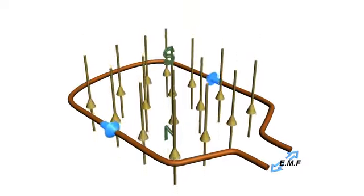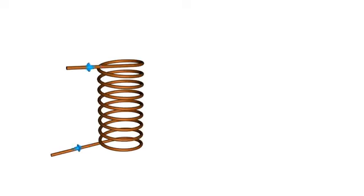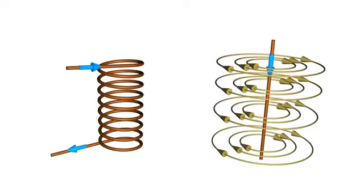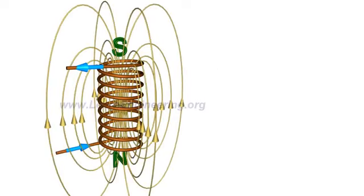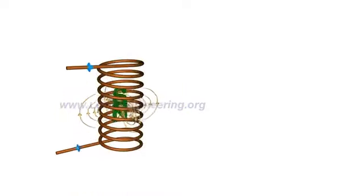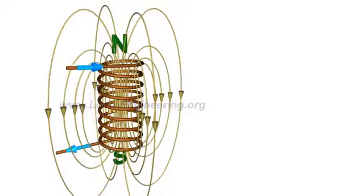Such a fluctuating magnetic field can easily be produced by a coil and an alternating EMF system. A current carrying conductor produces a magnetic field around it. With the fluctuating nature of the alternating current, the magnetic field associated with the coil will also fluctuate.